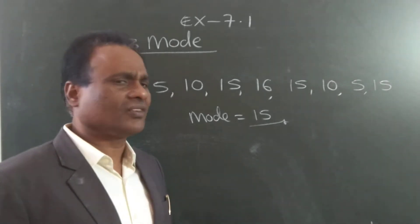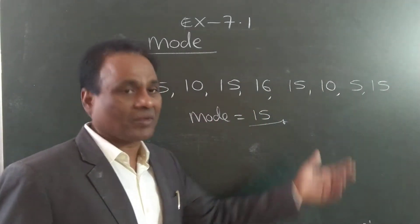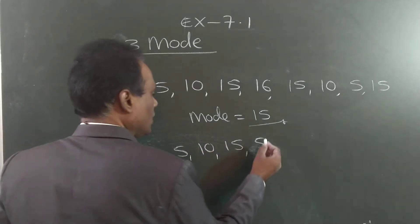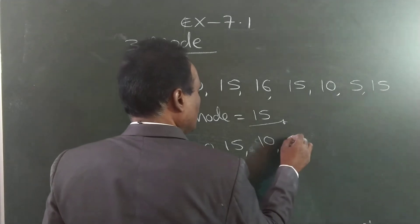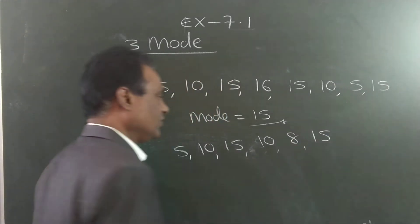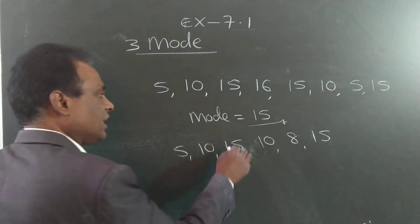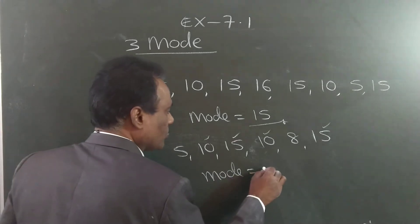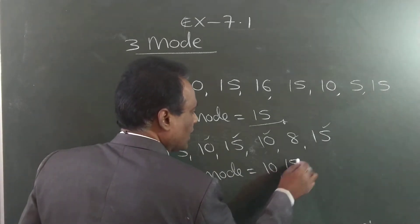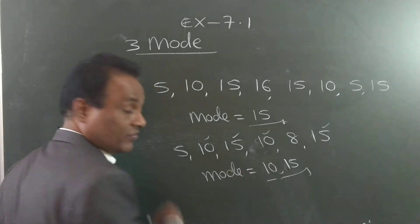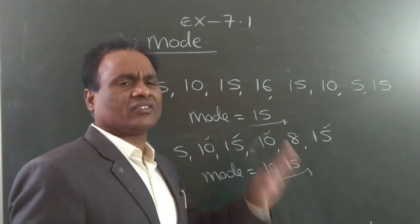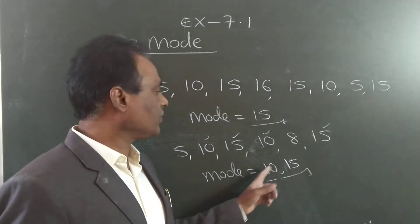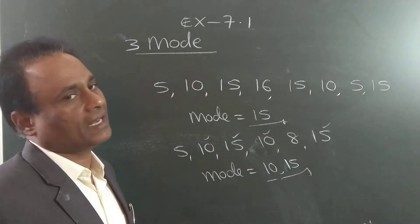But in some cases, another number may also occur the same number of times. For example, in the data 5, 10, 15, 10, 8, 15: 15 is occurring 2 times and 10 is also occurring 2 times. Then both 10 and 15 are the mode. We don't take their average like we do for the median — both are the answers.